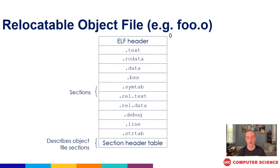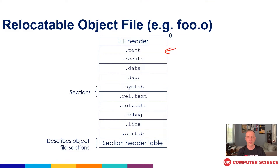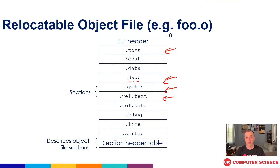In the text section we have all the assembly instructions for the actual program we wrote. We have read-only data that can never be changed over the entire execution of the program. We have the data section for changeable data — things like global variables. We have the BSS section, which is relevant for storing programs on disk; this is where we put things that don't need space allocated because they haven't been defined to something meaningful yet. Our easy mnemonic for BSS is 'better save space.' The next important set of sections are the symbol table, the relocation entries in the text section, and the relocation entries in the data section.